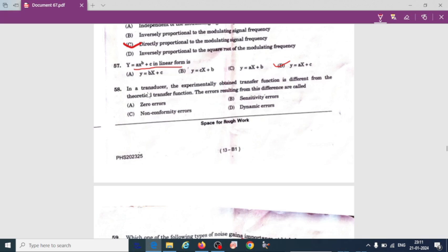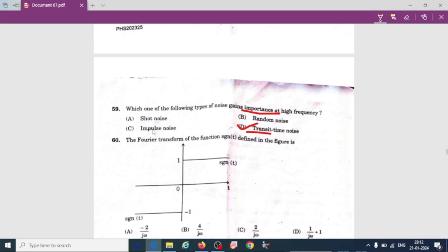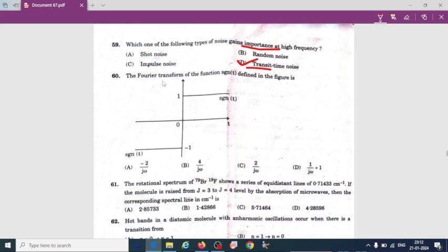In a transducer, the experimentally obtained transfer function is different from the theoretical transfer function. The errors resulting from this difference are called zero errors, sensitivity errors, non-conformity errors, or dynamic errors. So option C, non-conformity errors. The Fourier transform of function psi defined in the figure is option C: 2 divided by j omega.